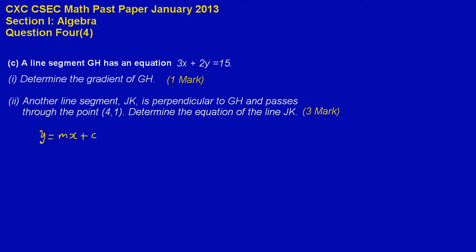Now in this case, they have given us the equation which is 3x plus 2y equal to 15. What we're doing — the whole idea is to write this equation in the general form of the equation of a straight line, which is y equal mx plus c. So basically, what I'm going to do is simply make y the subject. We have a 3x here; I need to have the y alone on this side, so I'm going to subtract 3x from both sides.